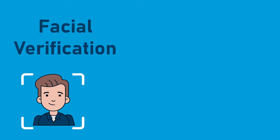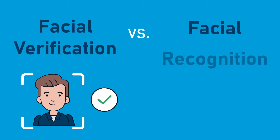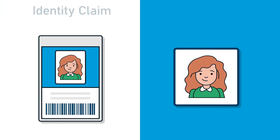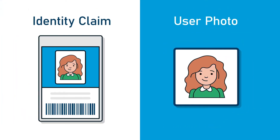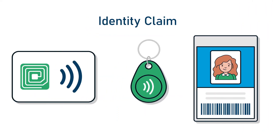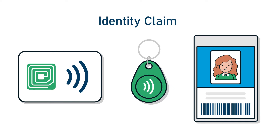Ever wonder what facial verification is and how it's different from facial recognition? Facial verification is the process of validating an identity claim based on a user's photo. An identity claim can take many forms, but typically are done using unique RFID keycards or FOBs that have been issued to each user.